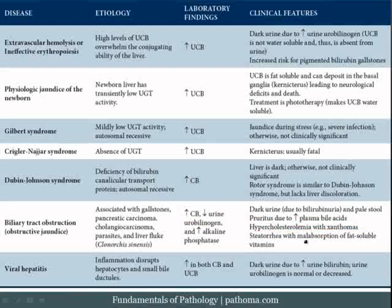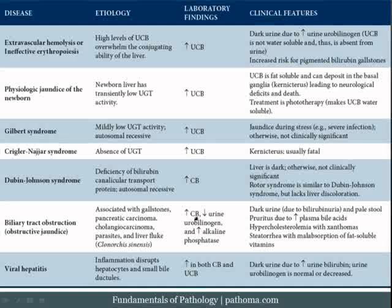The second consequence of obstructive jaundice is that you cannot put bile into the bowel, resulting in pale stool. In addition, patients get steatorrhea because without bile you cannot digest fat, and they get malabsorption of fat-soluble vitamins. The urine will be dark because conjugated bilirubin, which has risen, is water-soluble and leaks into the urine — while the stool remains pale.